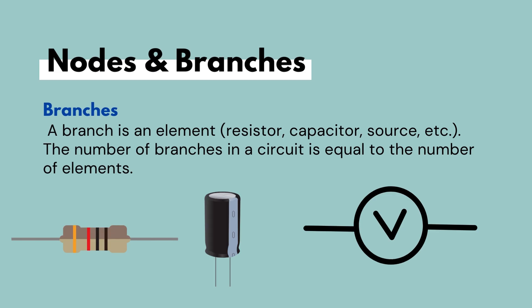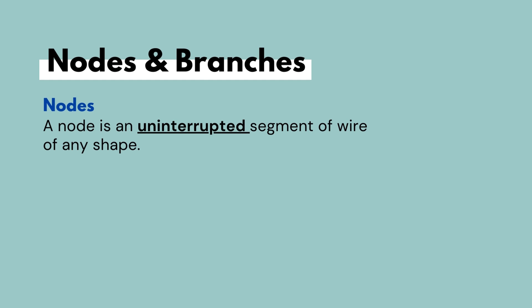Now, what is a node and how does it differ from a branch? To understand that, we must understand what branches in a circuit are. Branches are basically any two-terminal device or component — a resistor, a diode, a capacitor, or even an inductor — whereas a node is an uninterrupted segment of wire of any shape. Usually this wire is considered to be perfect and has no resistance. Therefore, all the points on the node have the same voltage.